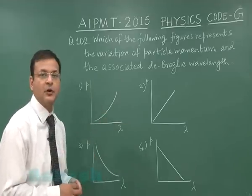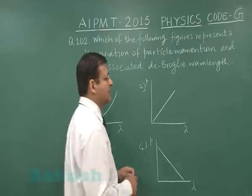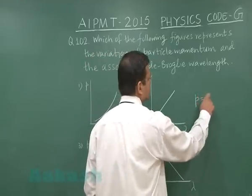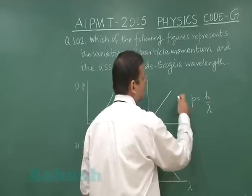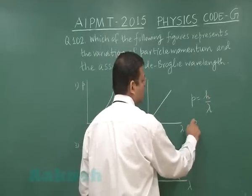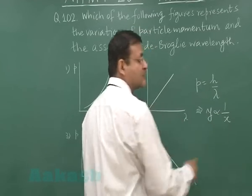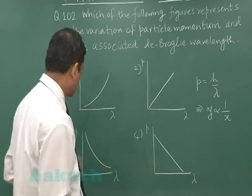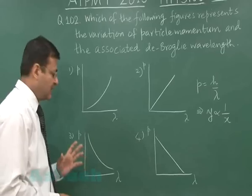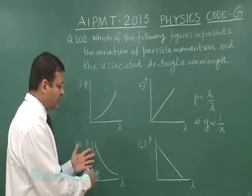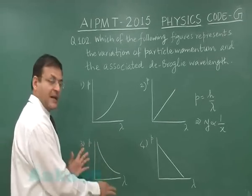What is the standard formula for matter waves? The de Broglie expression is P = h/λ. This is like drawing Y proportional to 1/X, which gives a rectangular hyperbola with this particular shape.